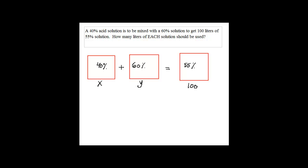So if I assume x would be the amount of 40% acid solution and y would be the amount for 60% acid solution, this would be my equation. The first equation would be x plus y equals 100 liters. The second equation would be 40% times x plus 60% times y should add up to 55% times 100. These are two equations with two unknowns that we have to solve for.